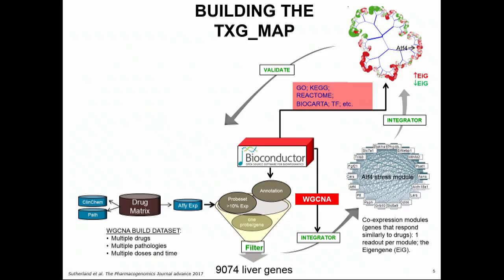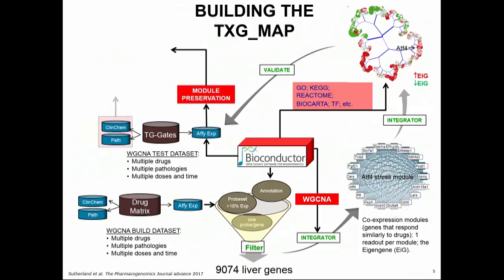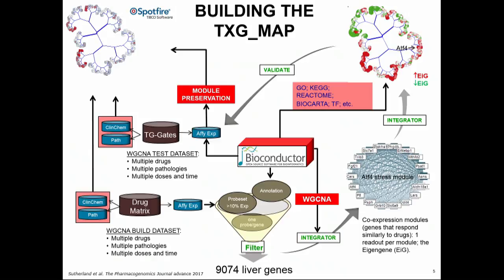How do we know this translates across other systems? Fortunately, we have an entirely separate database built by the Japanese National Toxic Cogenomics Program, and what we see is that 95% of all our modules are preserved — one of the advantages of network systems that Lance talked about. Once we know it's preserved, we can load in all the clinical chemistry data and pathology and ask what the associations are between pathology and the change in gene expression across the dataset.